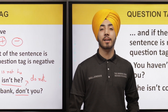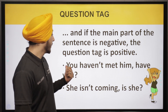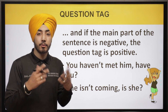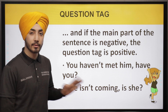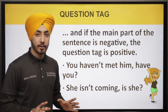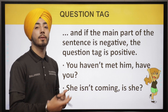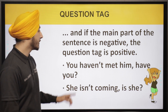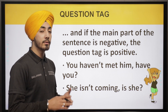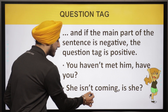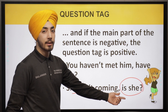If the main part of the sentence is negative, we put a positive question tag. For example: 'You haven't met him' and 'You don't get it' are negative sentences. We put the positive tag 'have you?' at the end. Question tags are a way to keep the conversation going — we don't just give a statement, we ask for a response. 'She isn't coming' is a negative sentence, so the question tag is positive: 'is she?' We put the question tag after a comma at the end of the statement.